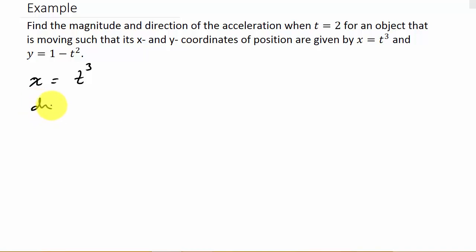x is t³, so dx/dt, which is actually the velocity—we'll write velocity as v_x—that's dx/dt, which is 3t². Then the acceleration, which is the second derivative, is 6t.